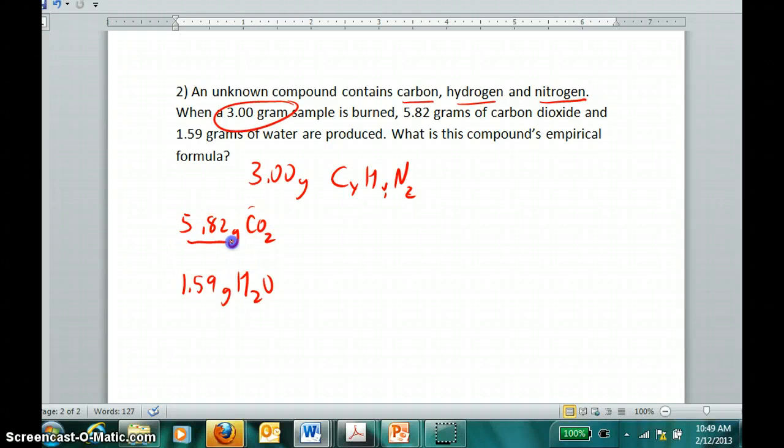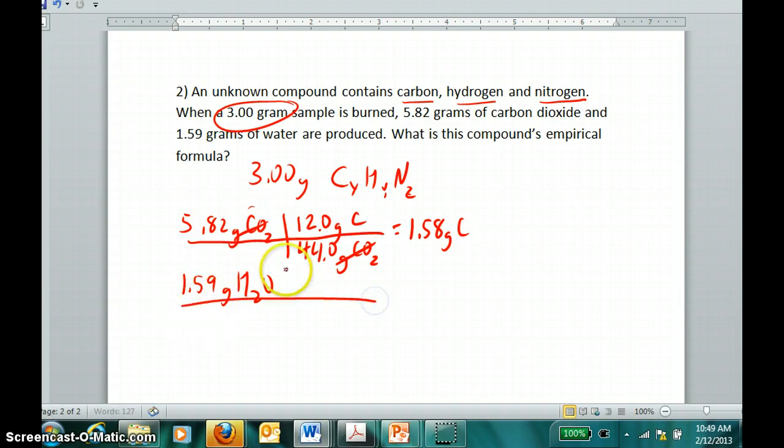First, I find out how much of this carbon dioxide is carbon. From formula masses, we know that 12 parts out of every 44 parts of CO2 are carbon. Do the quick calculation - the sample that was 3 grams contained 1.58 grams of carbon. We do the same thing for the hydrogen in water. Formula mass of water is 18, and the part that is hydrogen is 2, which means that our original sample contained 0.177 grams of hydrogen.